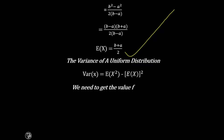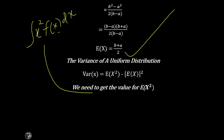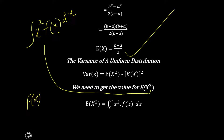For E of x raised to power 2, we proceed just as we did for the mean. This integral is x raised to power 2 multiplied by f of x dx, which gives us E of x squared. So E of x squared equals the integral from a to b of x raised to power 2 multiplied by f of x dx, and we recall that f of x for the uniform distribution equals 1 over b minus a. We substitute that in place of f of x.